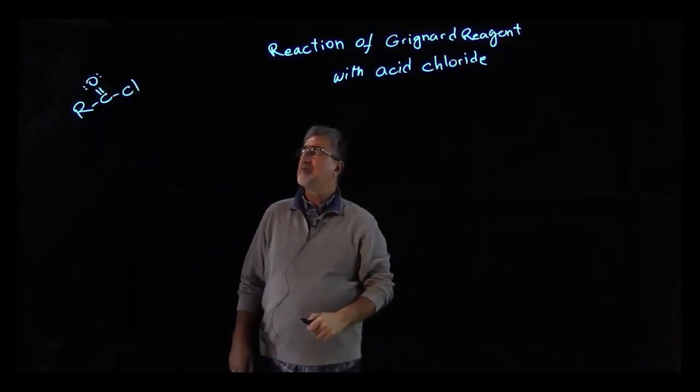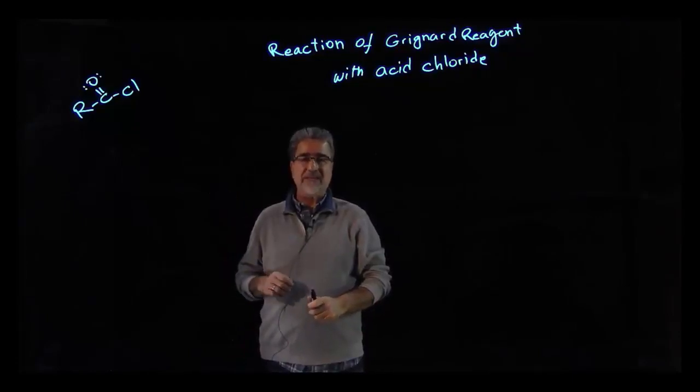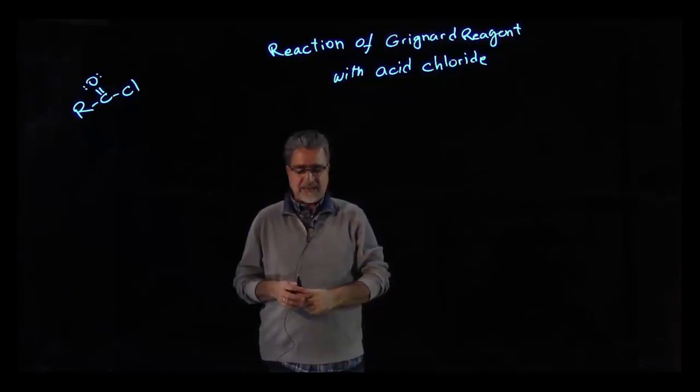And now we are going to see how a Grignard reagent would react with this acid chloride, and I'm going to use phenyl magnesium bromide as my reagent.